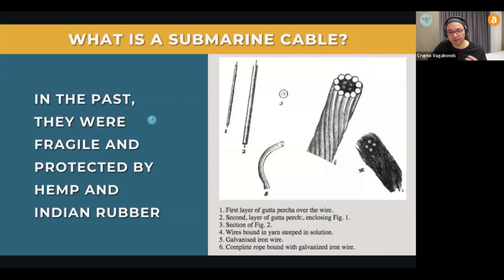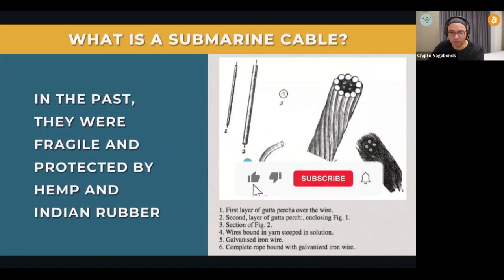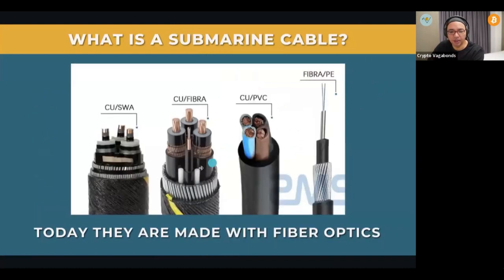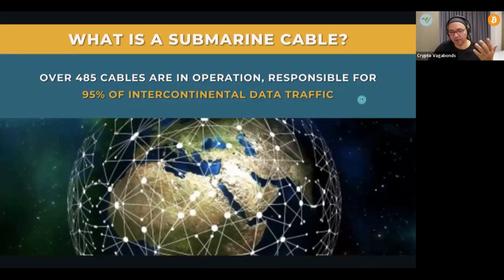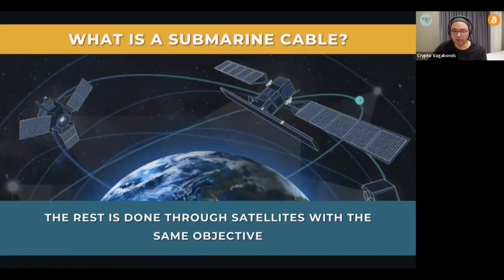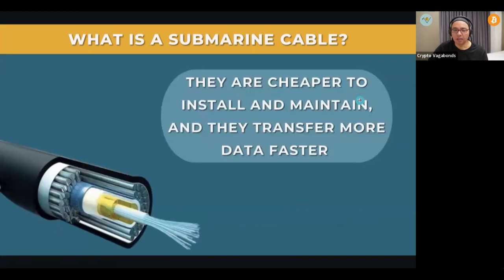In the past, those cables were very fragile and protected by hemp. Today they're made of fiber optics and are much thinner in comparison. Some fun facts: there are over 485 cables in operation, responsible for 95% of all international data traffic. A lot of people think communication is handled by satellites, but most of it — whether you're watching on YouTube or on Zoom — is happening via one of those cables. Less than 5% goes via satellite, and satellites have a latency problem that cables do not. Cables are cheaper to install, easier to maintain, and transfer data much faster.